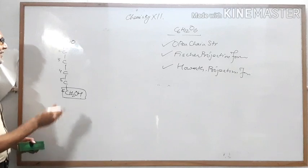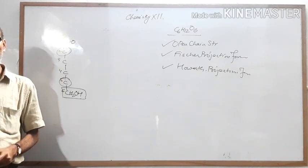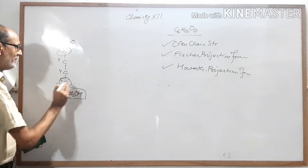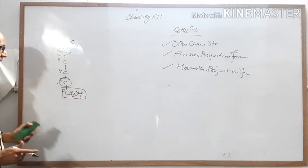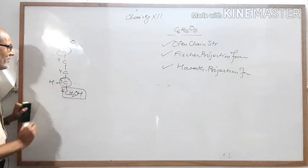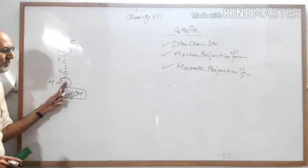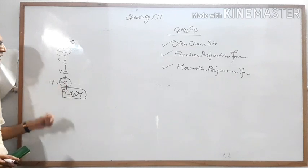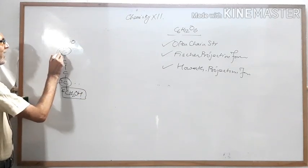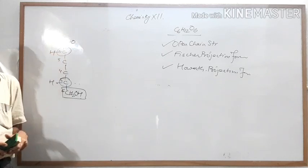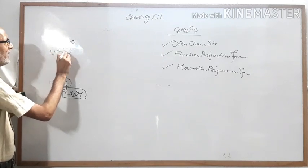The meaning of D and L relates to carbon number two and carbon number five. If you want to form the D structure, you must indicate the position of hydrogen on carbon number five. In glucose, if you attach hydrogen on the left side at carbon five, that indicates D. If you attach hydrogen on the right side, that indicates L. At carbon number two, if you attach hydrogen on the left side, that indicates plus.